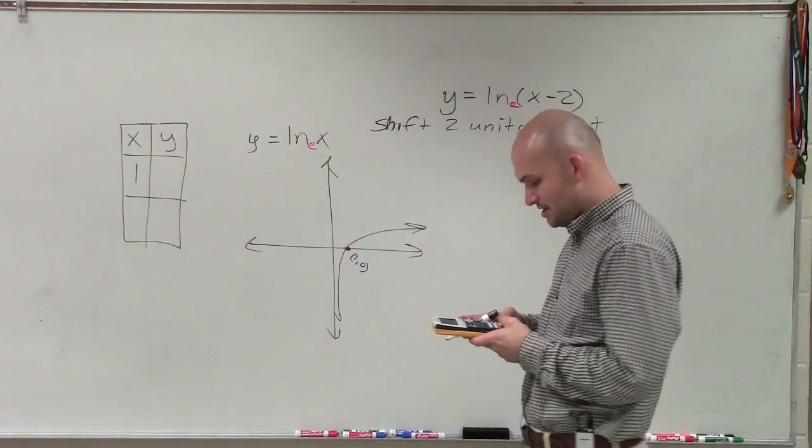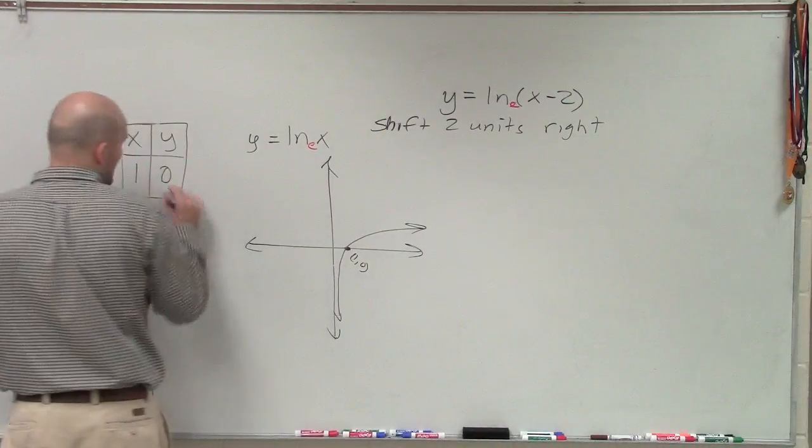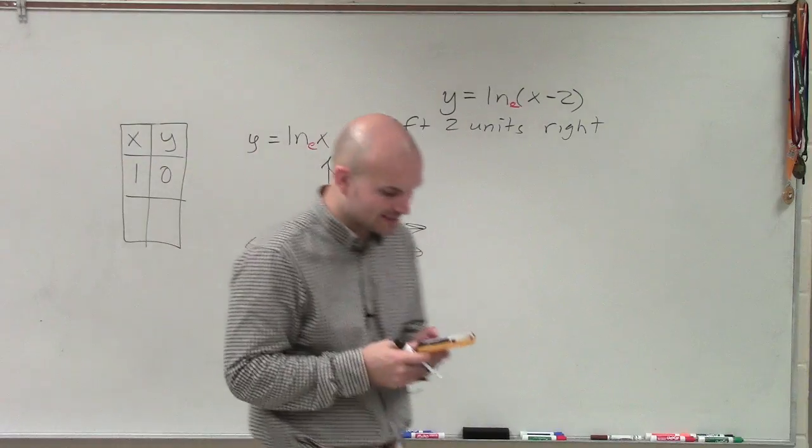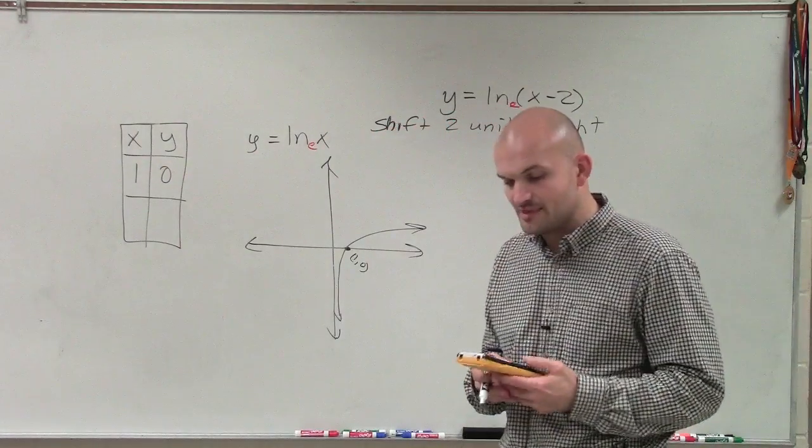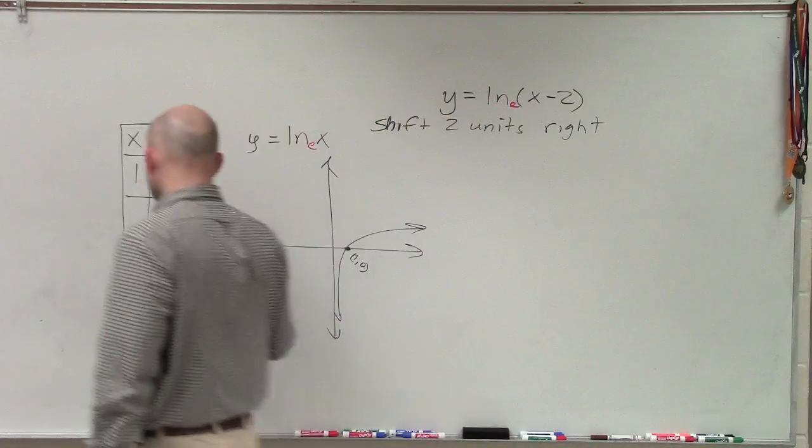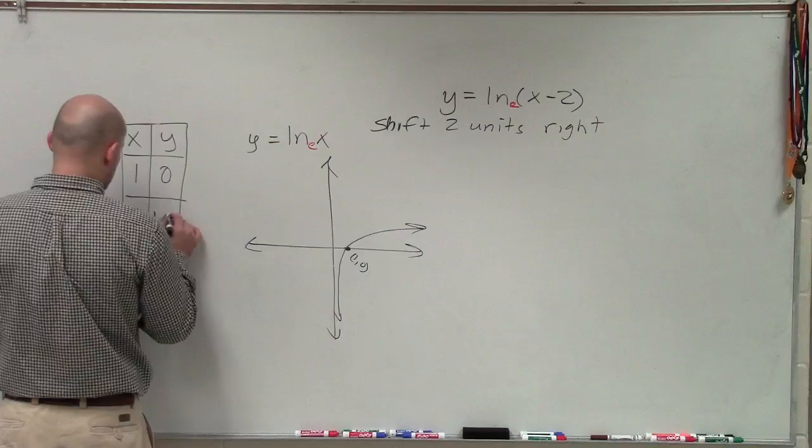So let's do ln when x equals 1. Well, therefore, my y is going to equal 0. Hence, how I already knew that 1 comma 0 was my point. Now let's do ln maybe of 5. Now this is going to be an irrational number. So I'm just going to approximate it to the tenth, so it's 1.61.